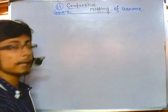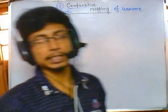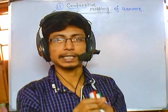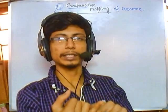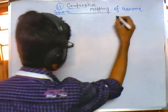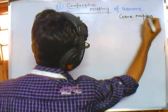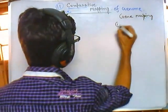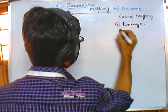Comparison can be observed using this kind of mapping. Genome mapping can give us certain ideas. There are two different types of genome mapping: one is linkage mapping and another one is physical mapping or gene mapping.